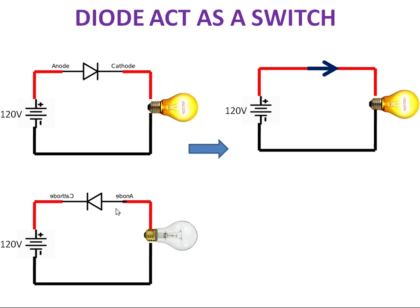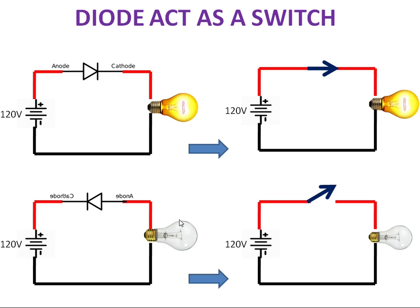But in this case, your diode terminals are interchanged. So your cathode is connected to high potential, anode is connected to low potential. Here your diode acts as an off switch. So like that you can use a diode as a switch.